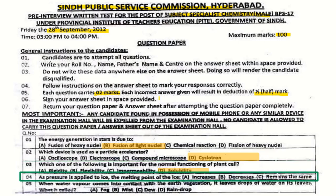Question number 4: As pressure is applied to ice, what happens to the melting point of ice? The correct answer is decreased — when pressure is applied to ice, the melting point decreases.